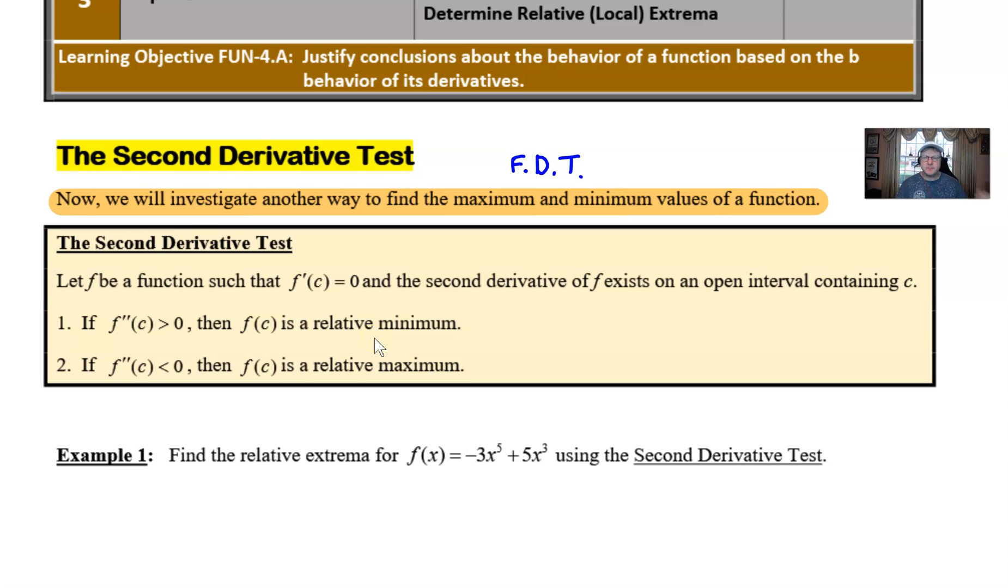That's really weird for a couple of reasons. First of all, we're taking a critical value from the first derivative and we're plugging it into the second derivative. That's very unusual. And then the second thing that sometimes students have issue with is the fact that this seems very counterintuitive. A positive result results in a minimum. A positive and a minimum? That doesn't seem to go together.